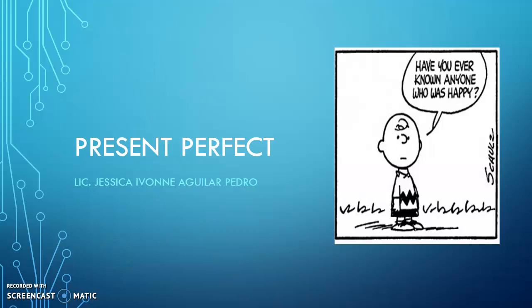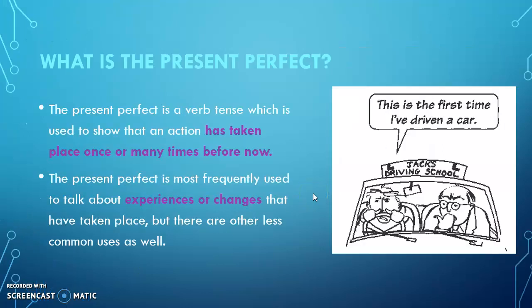Hello guys, today we are going to check the last topic of our program — the present perfect. So first of all, what is present perfect? Present perfect is a tense that you are going to use specifically for when you are talking about an action that started in the past and continues up until now. Also, this is mainly used for when you want to describe experiences or changes.